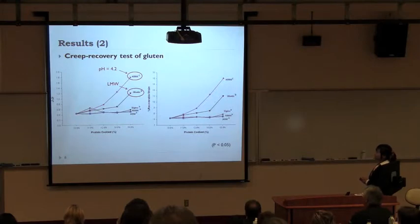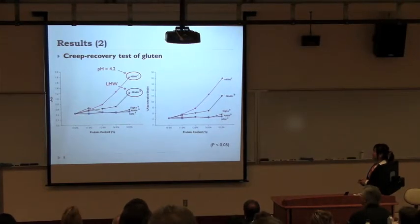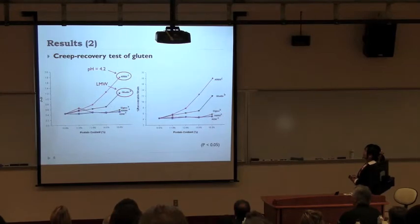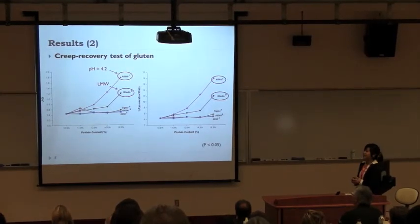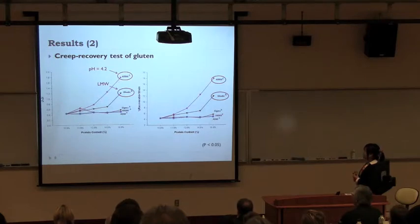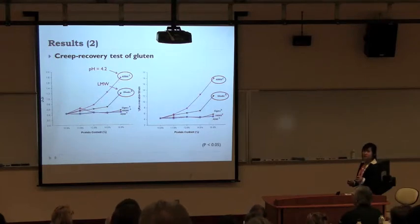This graph represents the deformability of gluten. These two products affect the gluten by making it more deformable.